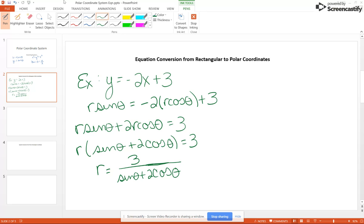Now let's look at another example. What if we had X equals 4? Well, X is R cosine theta, so R cosine theta equals 4. Divide through by cosine, so you get 4 over cosine theta. If you wanted to, you could rewrite this as 4 secant theta. Both answers are acceptable.